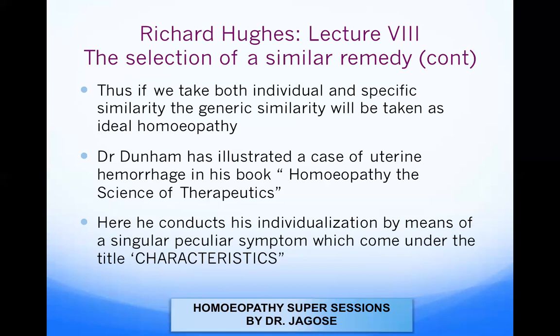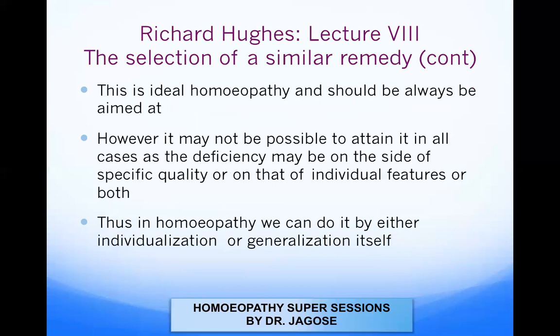Out of 40 remedies we have selected one single remedy with ease, based on the characteristic symptoms. Here, Dunham conducts individualization by means of a singular peculiar symptom — 'as if a living body was moving in the abdomen' — which called for Crocus. This is ideal homeopathy and we should always aim for it.